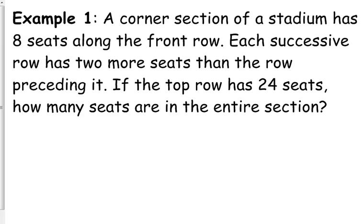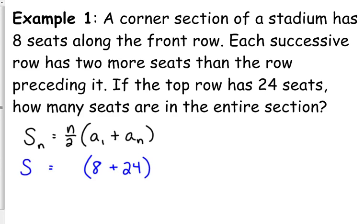Let's look at a problem. This is an application problem. A corner section of a stadium has eight seats along the front row. Each successive row has two more seats than the row preceding it. If the top row has 24 seats, how many seats are in the entire section? If we use our formula, n over 2 times a sub 1 plus a sub n. We know that the front row has eight seats, that's our a sub 1. We know that the top row has 24 seats, that's our last term. The problem is we don't know how many rows there are.